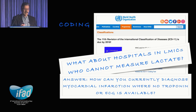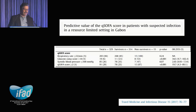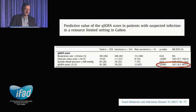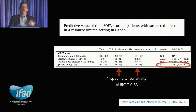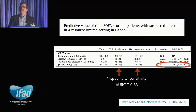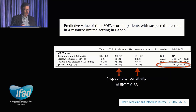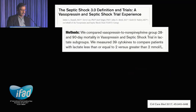Regarding quick SOFA, a study from Gabon suggested you can detect patients likely to do badly — they had bacterial infections, malaria, whatever — using the quick SOFA criteria.